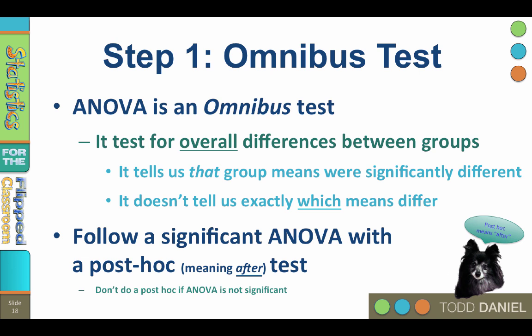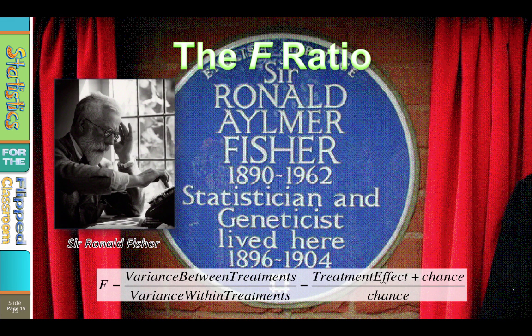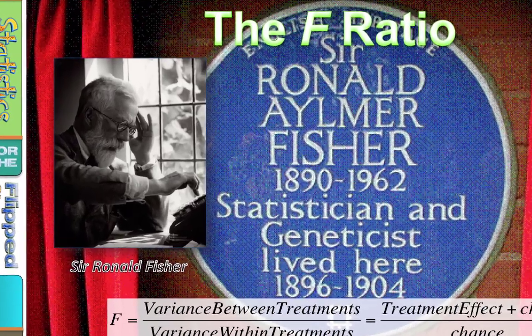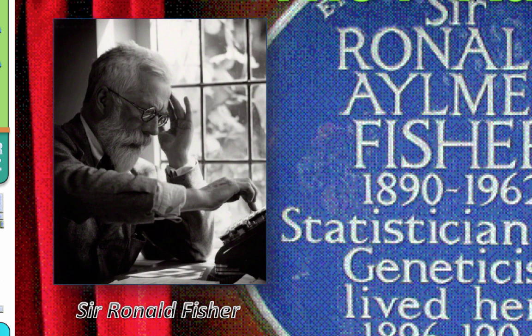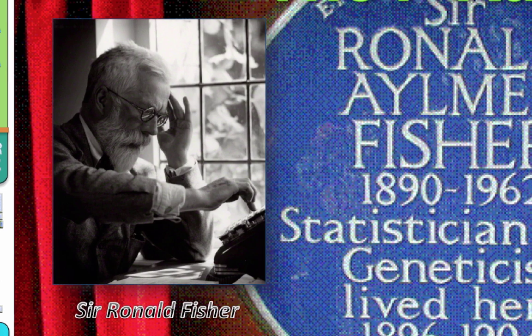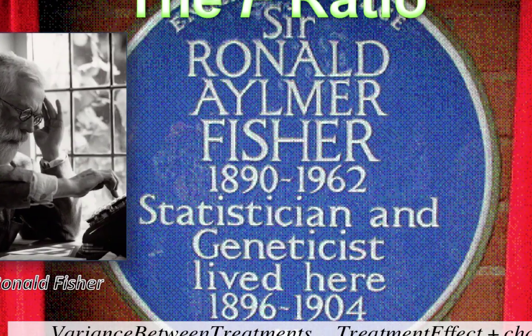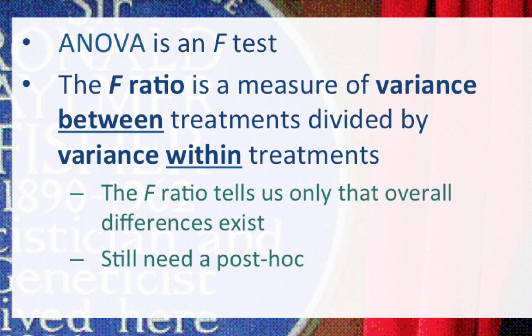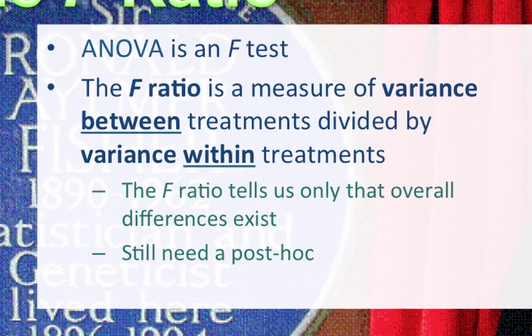Post hoc is Latin meaning 'after.' We will only do a post hoc test if the ANOVA is significant. ANOVA is an F test, and it uses the F ratio, so-called because it is named after British statistician and geneticist Sir Ronald Fisher. The F ratio is a measure of the variance between treatments in the numerator, divided by the variance within treatments in the denominator. A significant F ratio tells us that the experiment was successful and that the group means differ, but you still need to follow up with a post hoc.